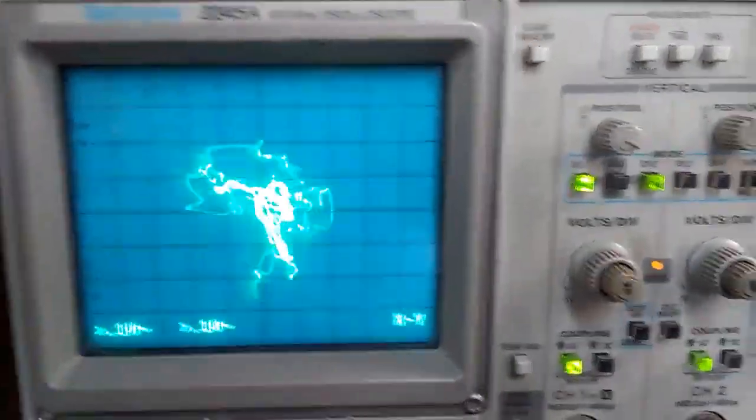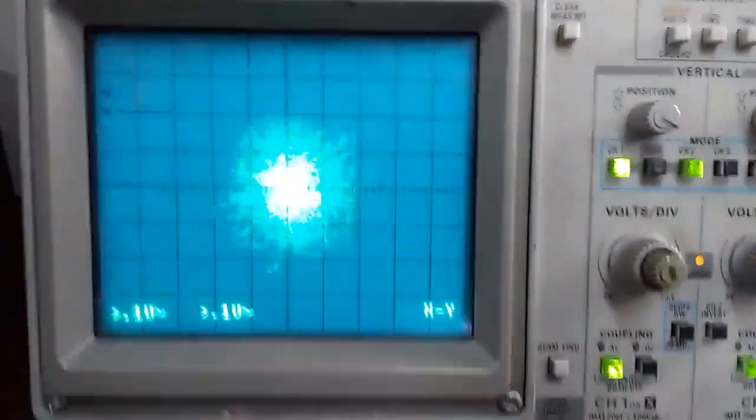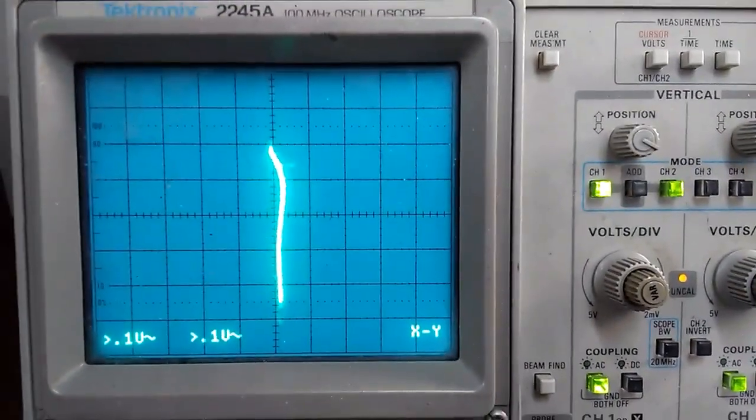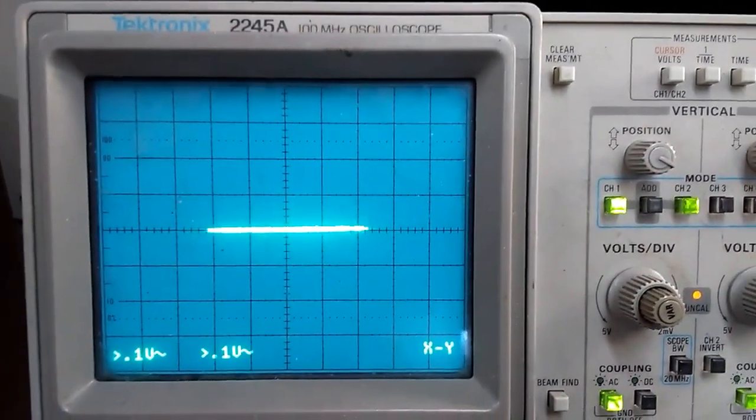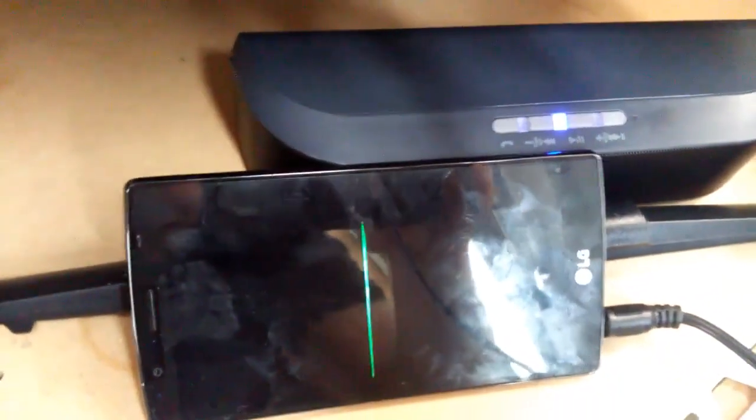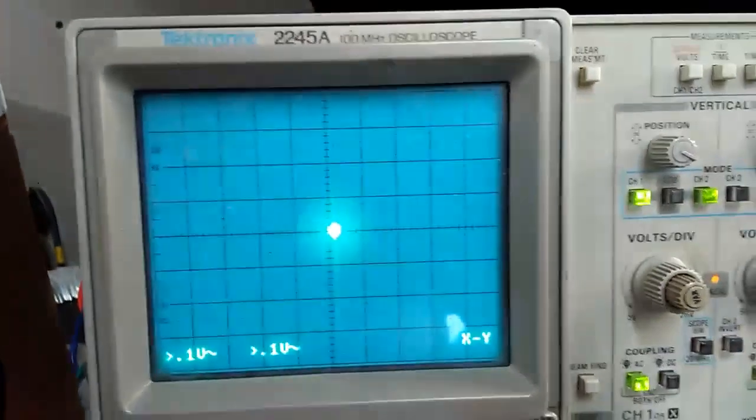Today I'm going to show you how to draw mushrooms on an oscilloscope with sound. We're going to use our left audio channel for horizontal deflection and our right audio channel for vertical deflection.